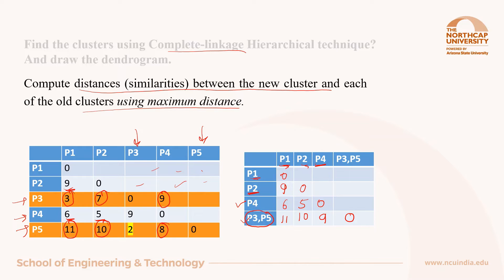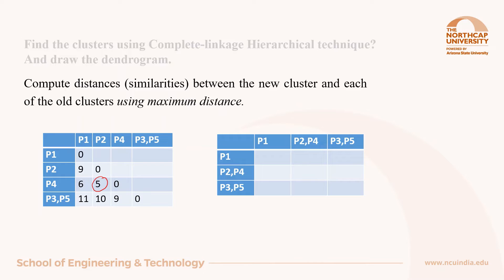In the same way, repeat and find out the next shortest distance, which is 5 here. So now it is required to merge the two points or clusters P2 and P4 together. After merging the two clusters P2P4, the new matrix will be of size 3 by 3, and again we need to compute the distances.